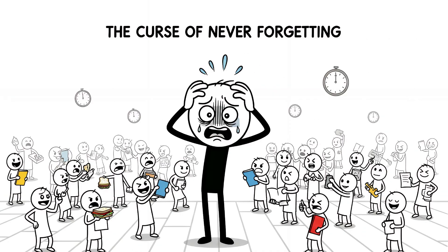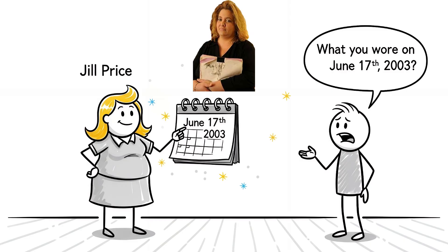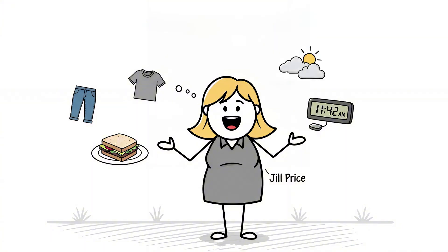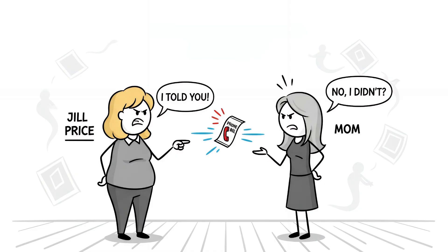Number 6. The Curse of Never Forgetting. Ask Jill Price what she wore on June 17, 2003. She'll tell you, blue jeans, grey t-shirt, turkey sandwich at 11:42 AM, 73 degrees with patchy clouds, and that she argued with her mom about a phone bill.